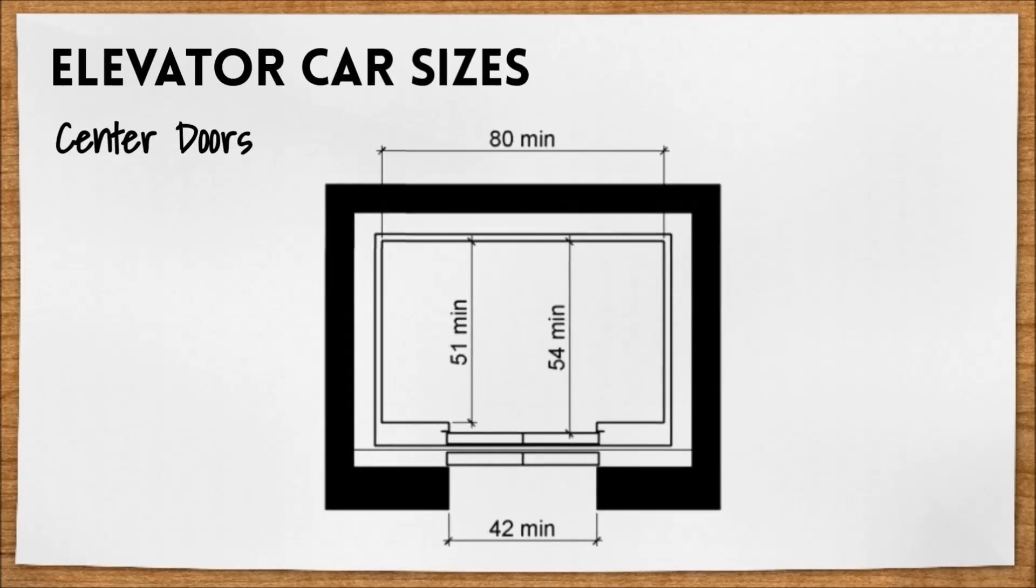An elevator with doors located in the center should be at least 80 inches wide, 51 inches deep from the back wall to the front wall, and at least 54 inches deep from the back wall to the door. The door's clear opening should be at least 42 inches wide.